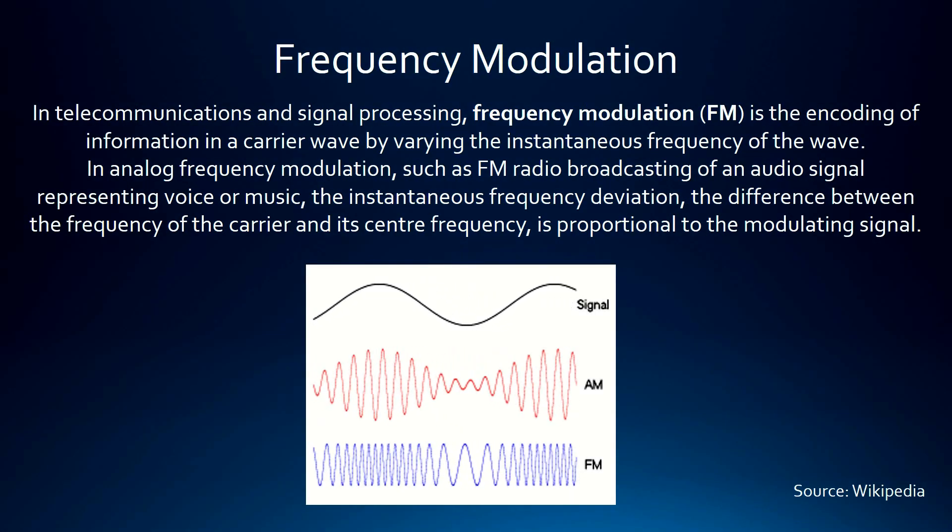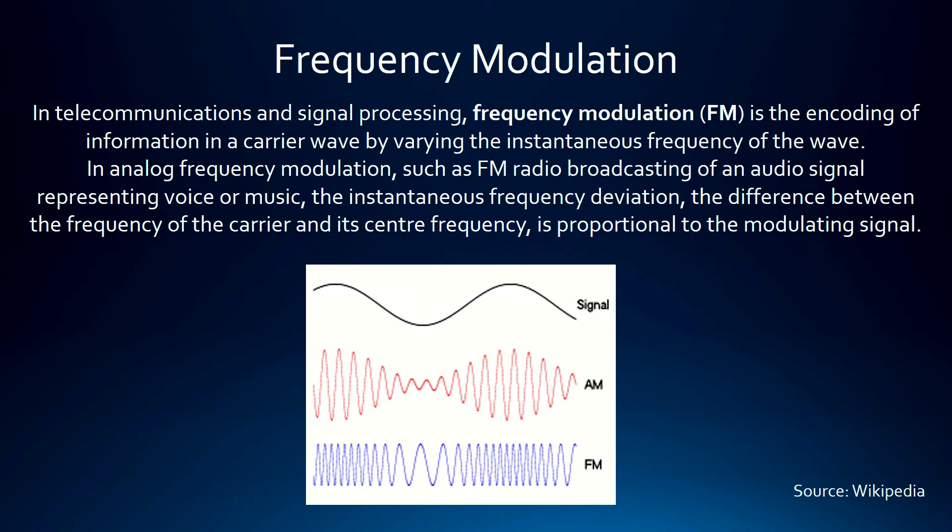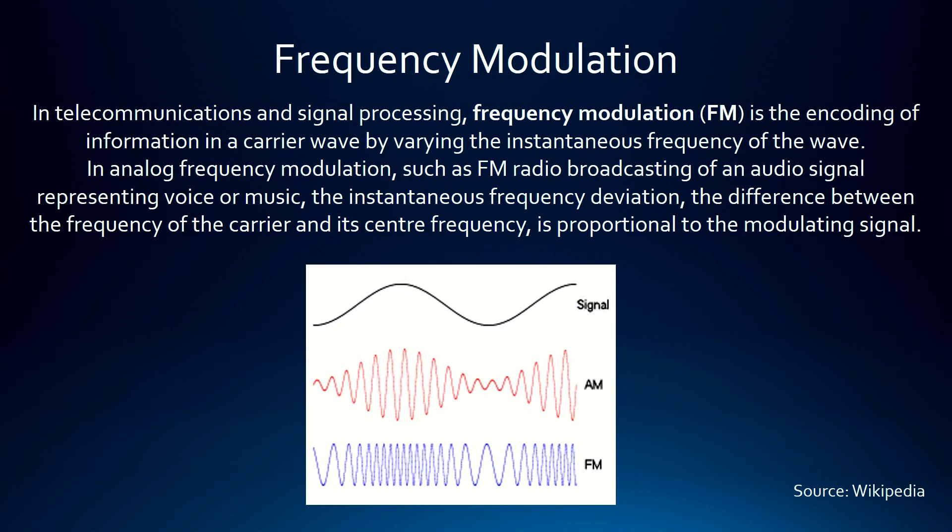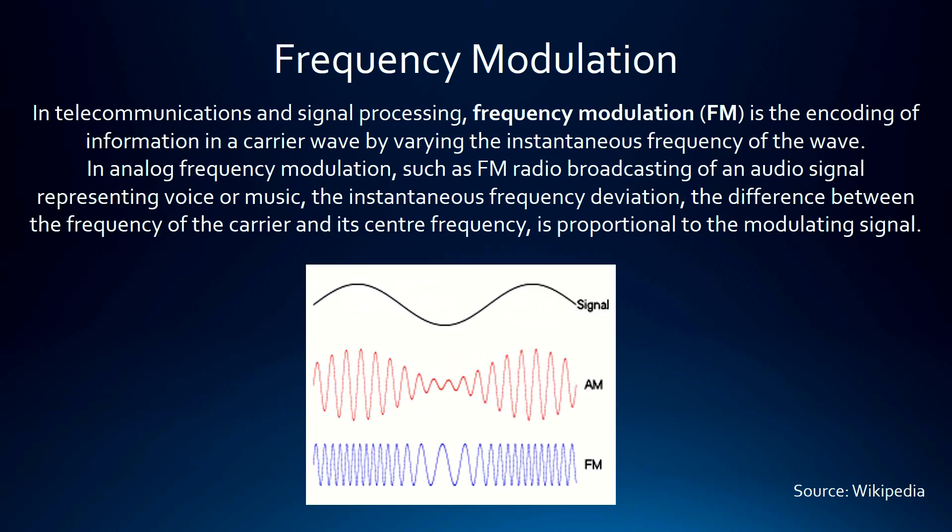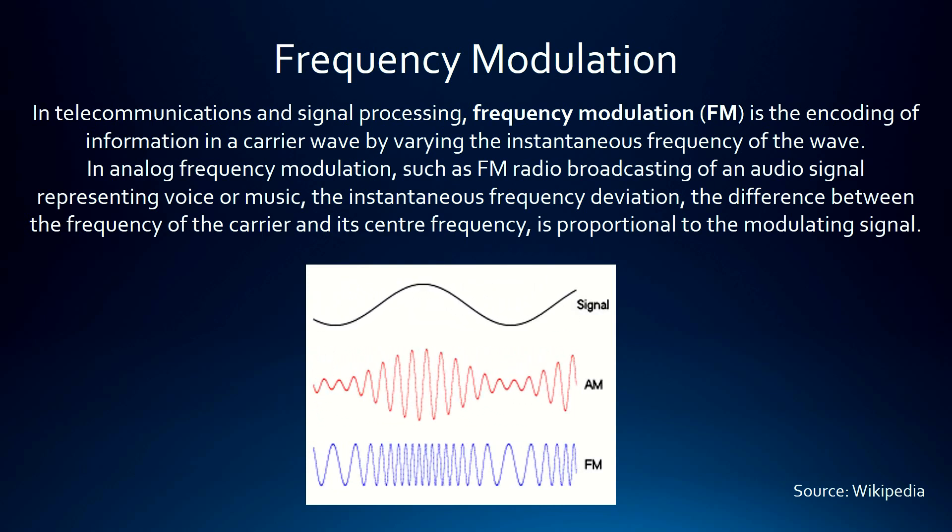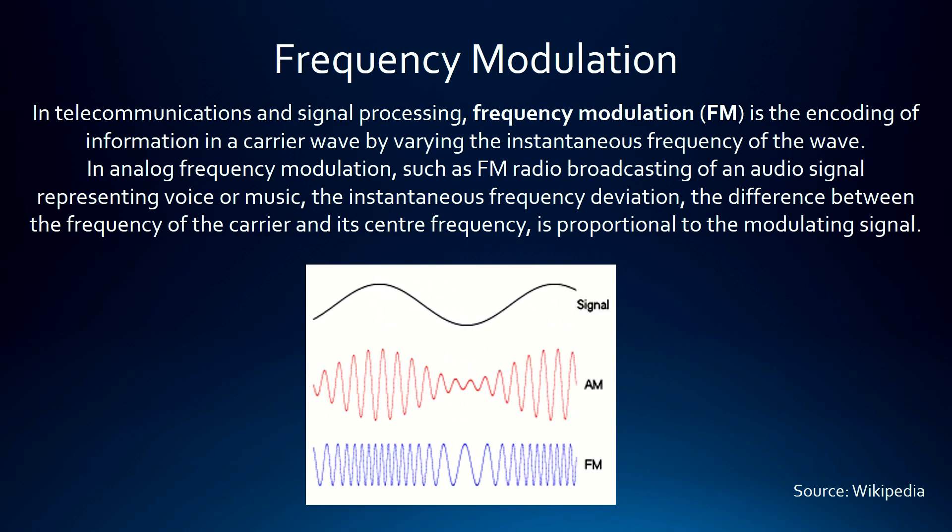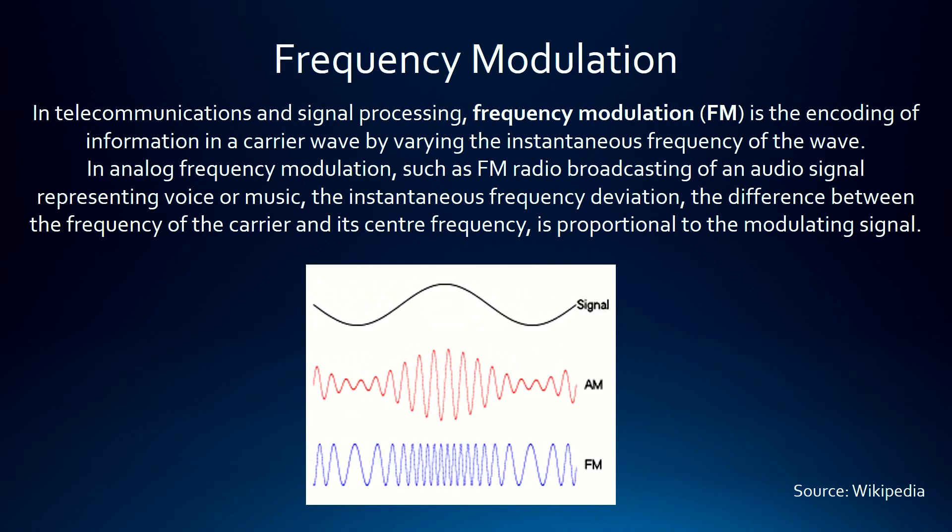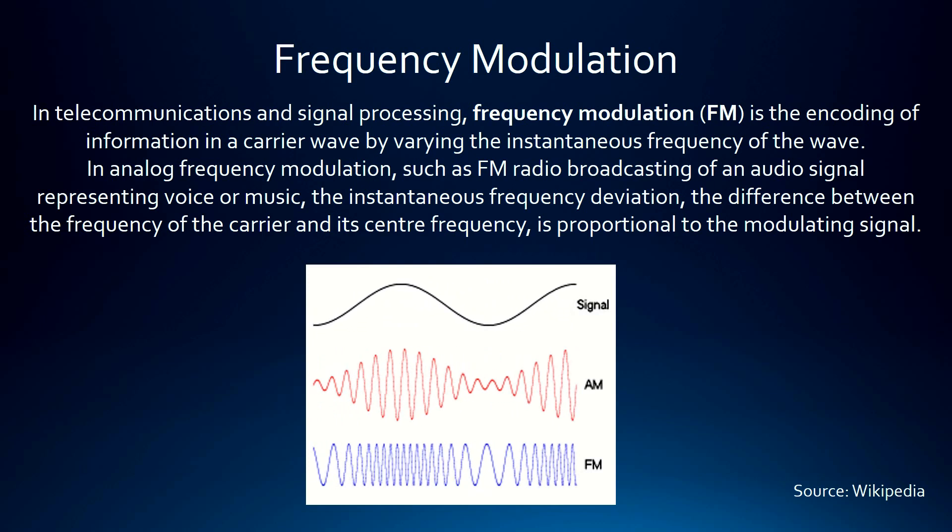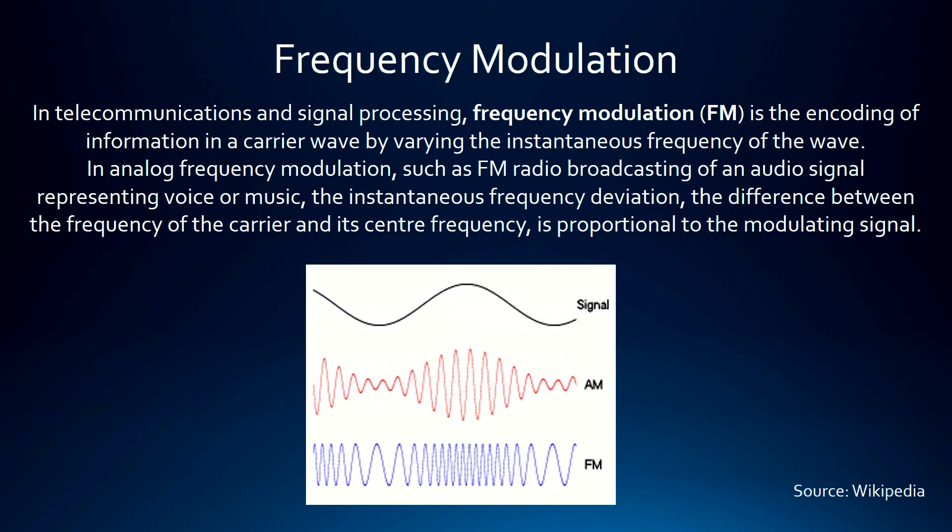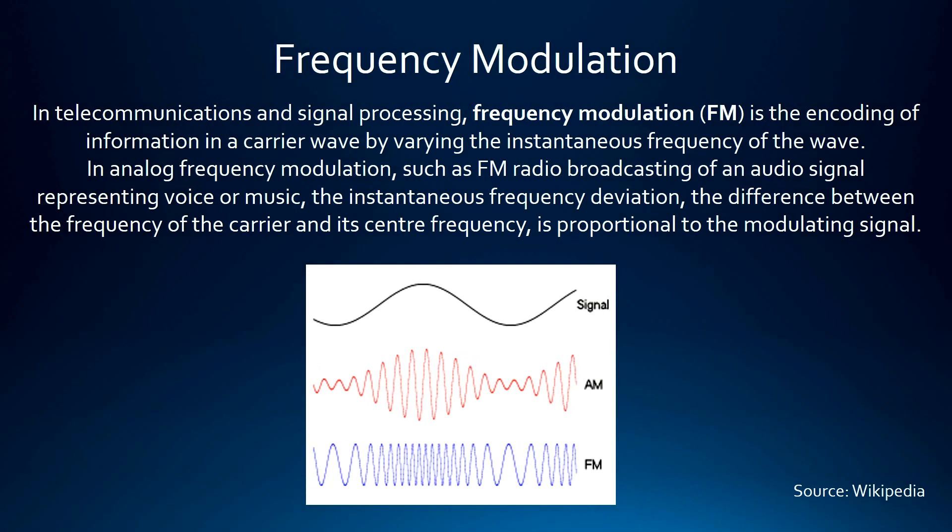Frequency Modulation. In telecommunications and signal processing, the frequency modulation or FM is the encoding of information in a carrier wave by varying the instantaneous frequency of the wave. In analog frequency modulation such as FM radio broadcasting of an audio signal representing voice or music, the instantaneous frequency deviation, the difference between the frequency of the carrier and its center frequency, is proportional to the modulating signal.